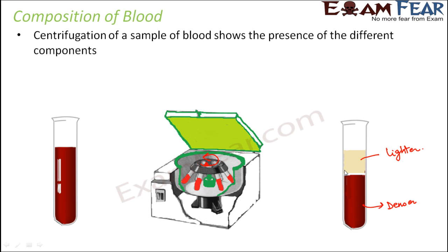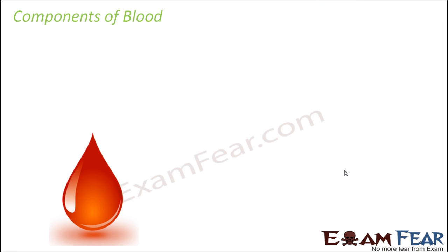That's how it was found out that blood is not just one particular liquid — it is made up of different components, some of which are denser and some of which are lighter. Let us now look at the various components of blood obtained after centrifugation of the blood sample.